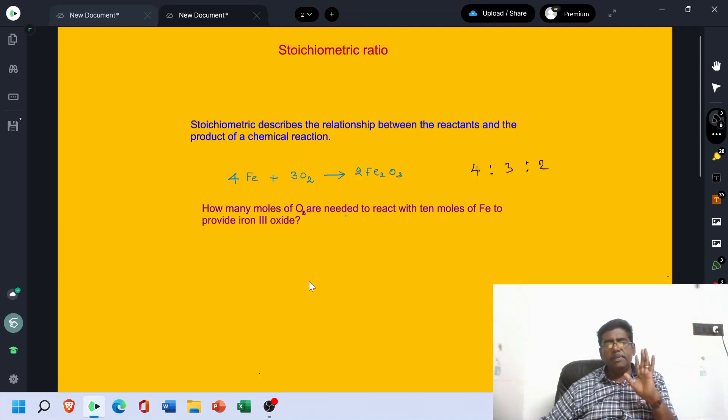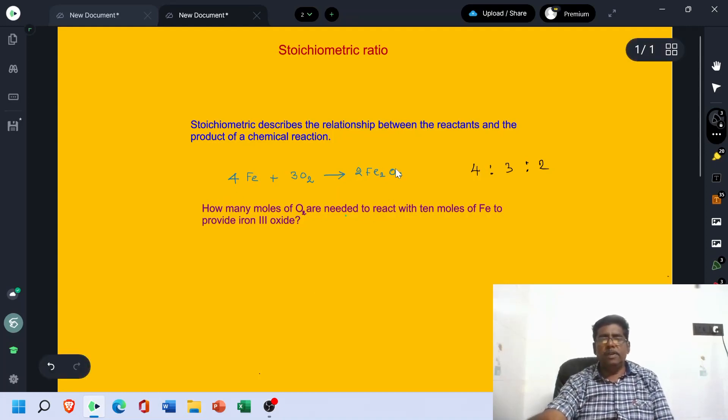Stoichiometric describes the relationship between the reactants and the product of a chemical reaction. See, this is a balanced chemical reaction. 4 moles of Fe react with 3 moles of O2 and then provide 2 moles of Fe2O3. Then the ratio is 4 is to 3 is to 2.